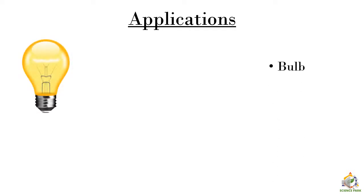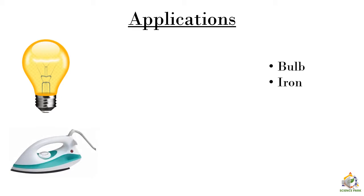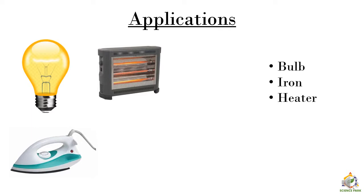Let's look at the applications of the heating effect of electric current. The first one is the electric bulb — the filament glows because it gets hot due to the passage of electric current. Then we have the electric iron, which we use to iron our clothes — there is a coil inside that gets heated up due to electric current. We also have the heater, based on the same principle, used as a room heater.